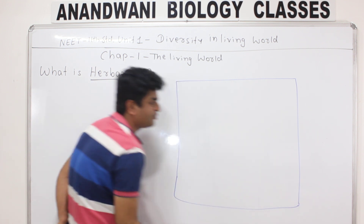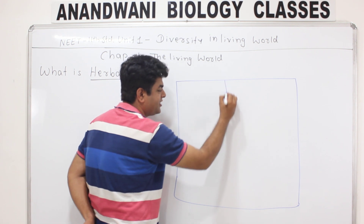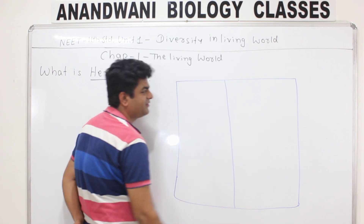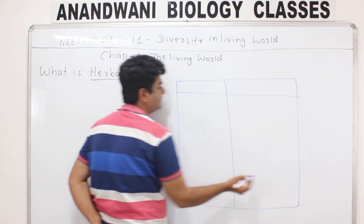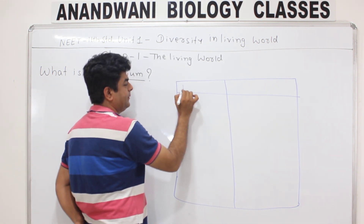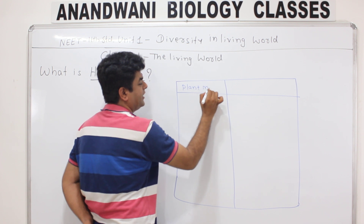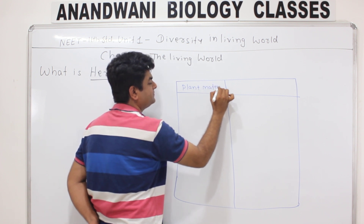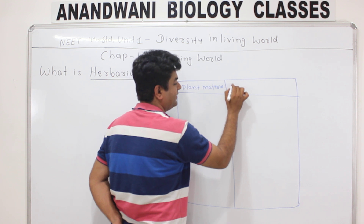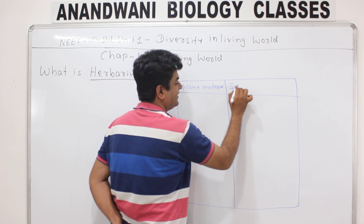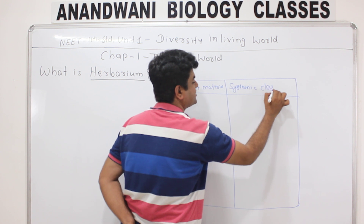The herbarium sheet is divided into two parts. The first part contains the actual plant material, and the second part contains the systematic classification of that plant.